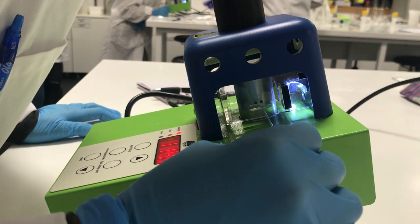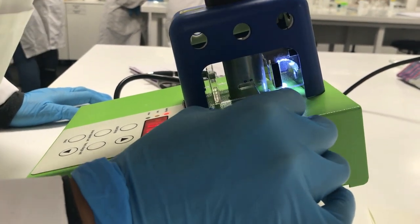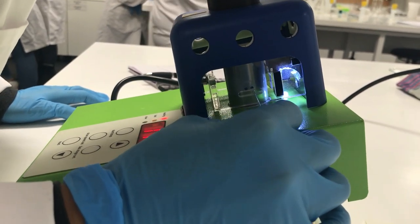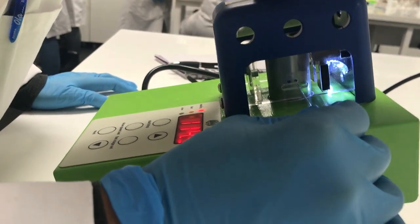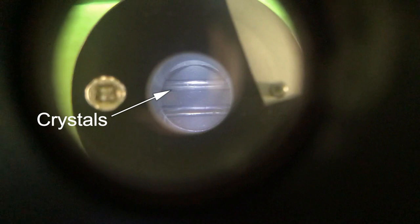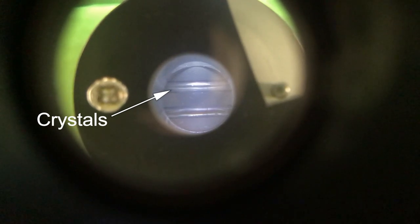Using the melting point apparatus determine the melting point of the product. Record the temperature at which the crystals begin to show signs of melting and again once the crystals have melted completely. This is done to determine the purity of the product.